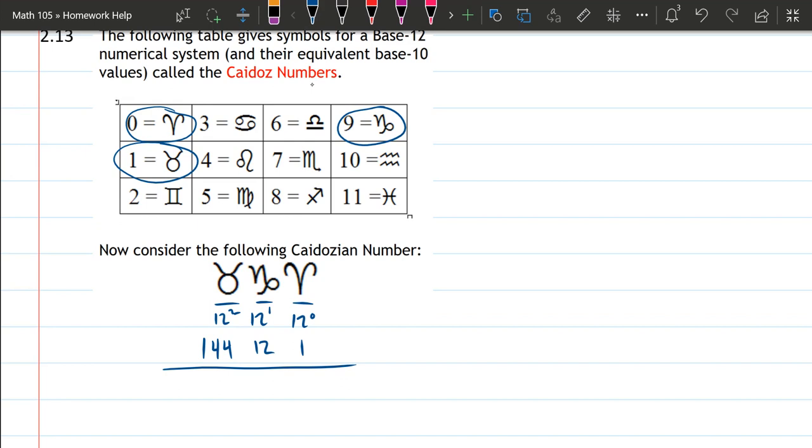I've already circled the digits that we're actually using in this particular number. First up, we have 0, is this little v symbol, so we have 0 ones. How many 12s do we have? That is this symbol right here, which is 9. And then how many 144s do we have? We happen to have 1 144.